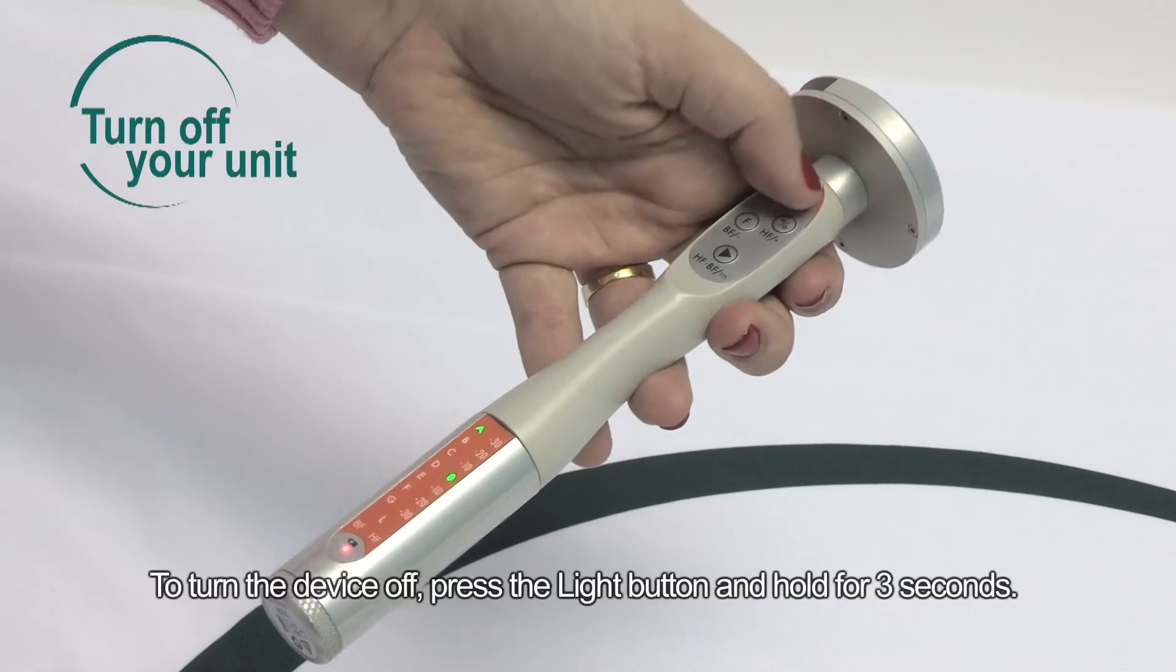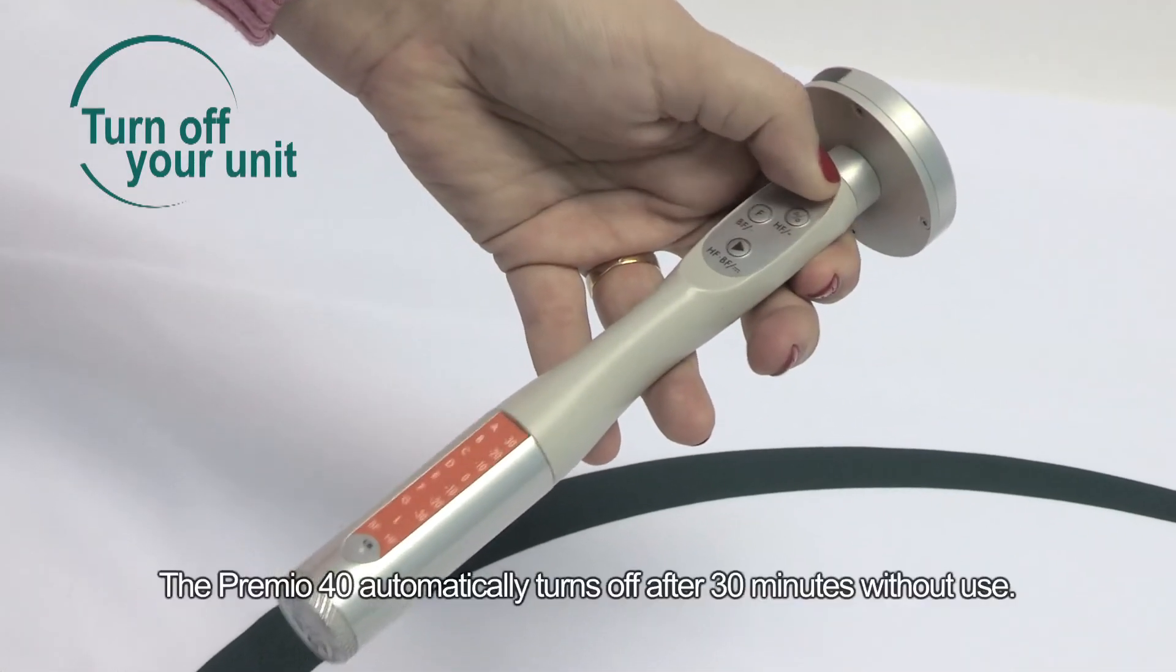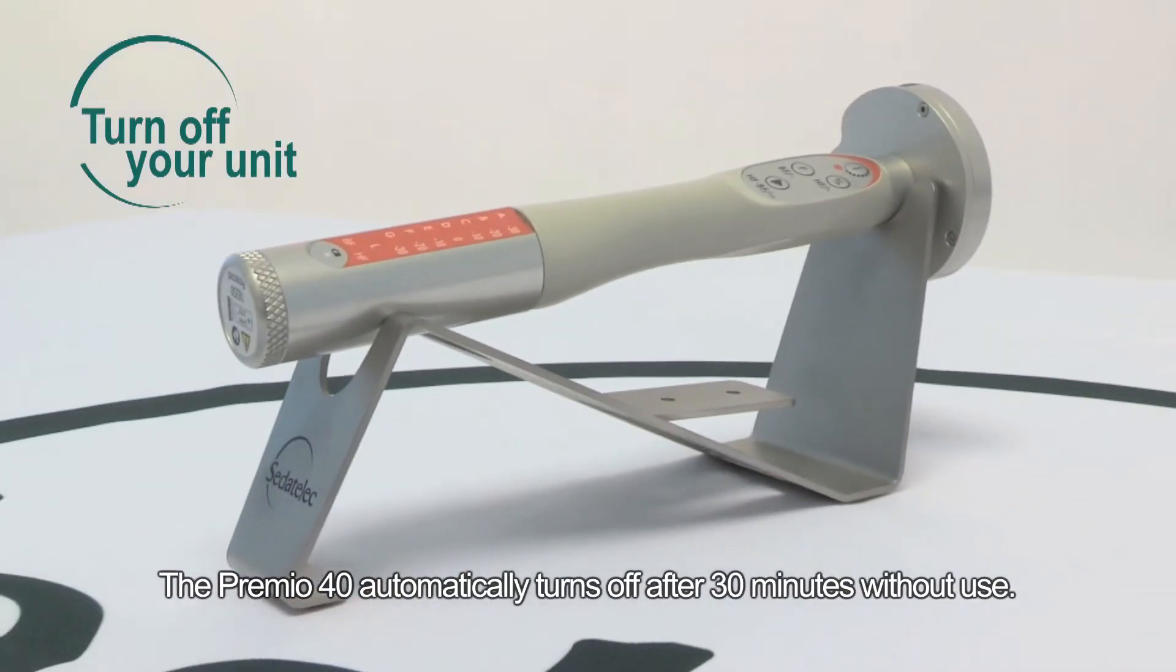To turn the device off, press the light button and hold for three seconds. The Premio 40 automatically turns off after 30 minutes without use.